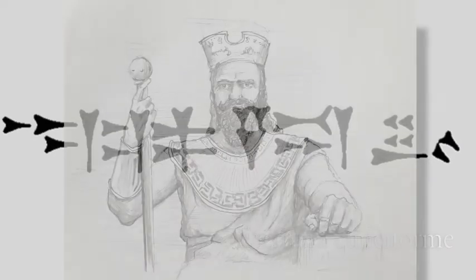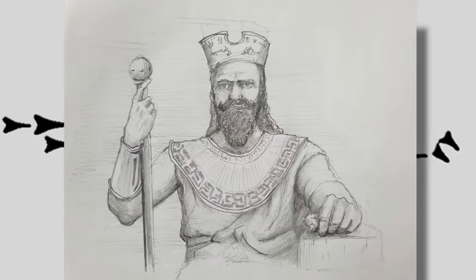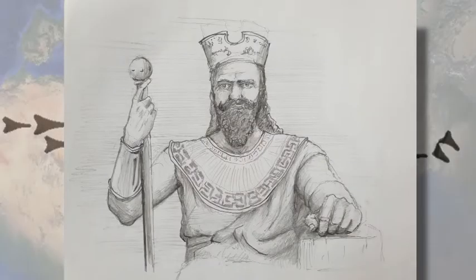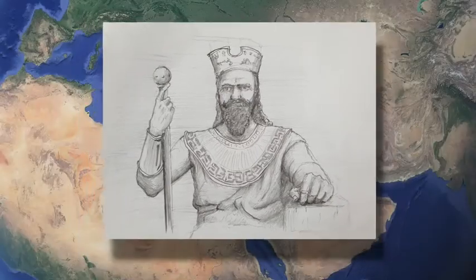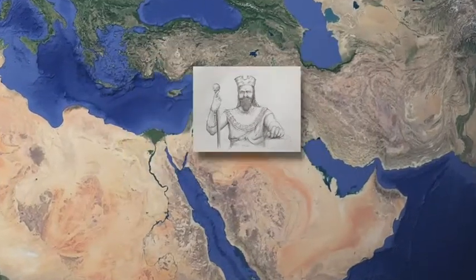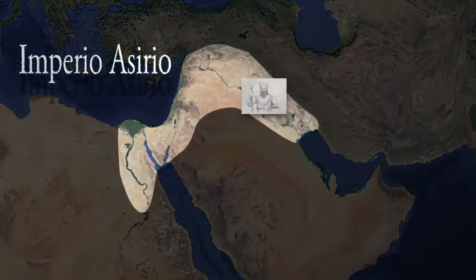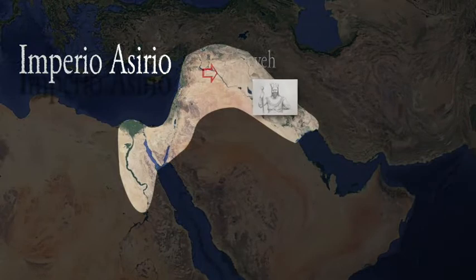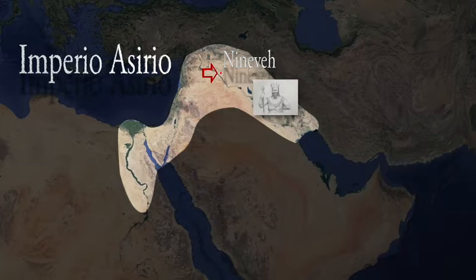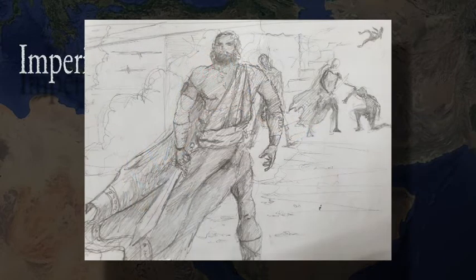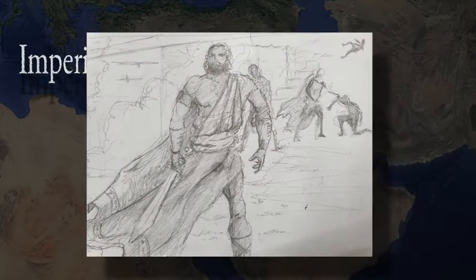Nabucodonosor, rey del nuevo imperio asirio, con su capital Nineveh. Corría el año 580 a.C. Ya había destruido el templo de Jerusalén mientras lo invadía en su segunda vez y continuaba con su campaña para extender el dominio en su región. Al frente de su ejército, el brutal Olofernes.